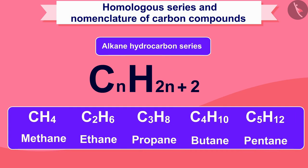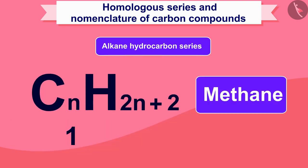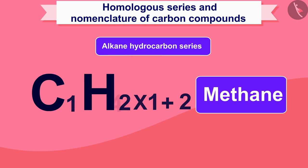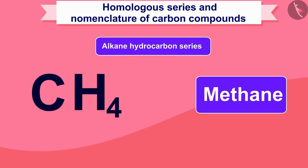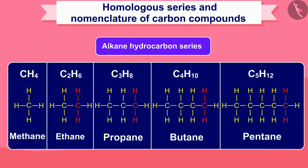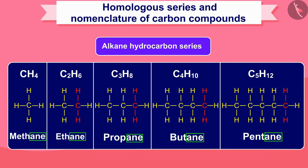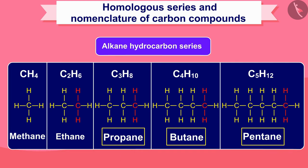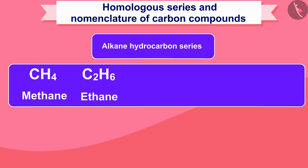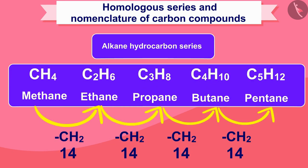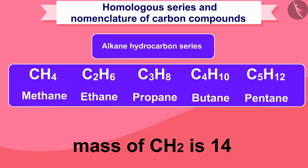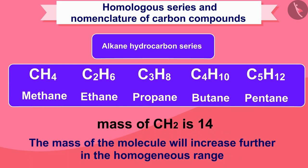For example, in the first compound methane, N will be 1. If we write 1 instead of N in the formula CₙH₂ₙ₊₂, we will get the molecular formula of methane, CH₄. All carbon compounds in this category belong to a single bond, and 'ane' will be added at the end of the name. There is a difference of 14 mass units between one member and another, because the mass of CH₂ is 14.